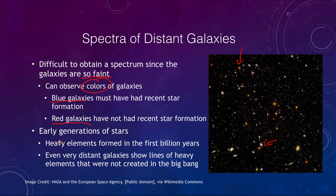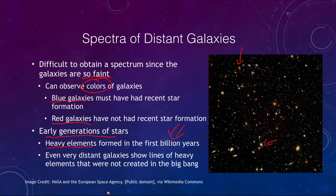This also tells us about the early generations of stars. Heavy elements formed in the first billion years of the history of the universe — it did not take a long time for heavier elements to develop. We know they did not form in the Big Bang, but they formed relatively quickly once stars existed. We know this because even very distant galaxies show spectral lines of heavy elements, meaning anything that is not hydrogen or helium.